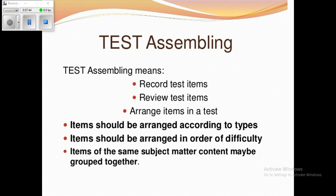Further review questions: Is the intent of the item clear? Is the item free from excessive verbiage? Is the item of appropriate difficulty? Does the item have an answer that would be agreed upon by experts? Is the item free from technical errors and irrelevant clues? Then we will arrange items in a test. There are various methods of grouping items in an achievement test, and the method will vary with the use to be made of the results. Items can be arranged by systematic consideration of item type, learning outcomes, difficulty level, and subject matter.